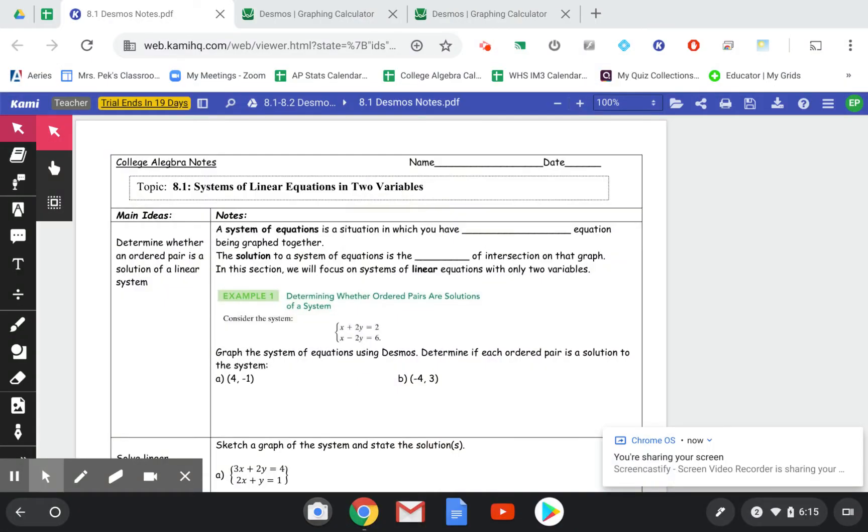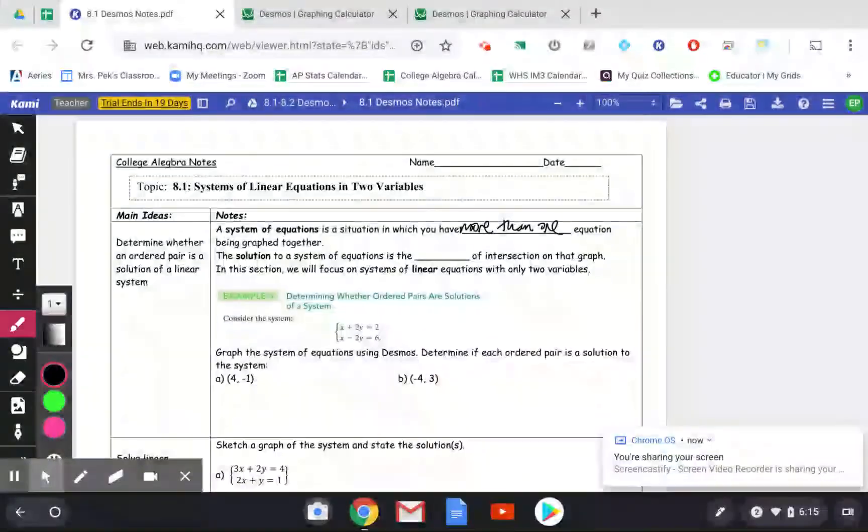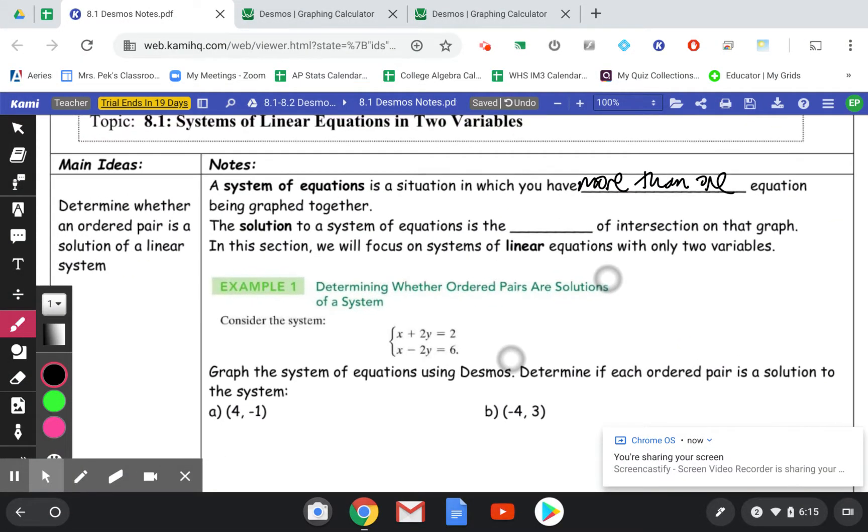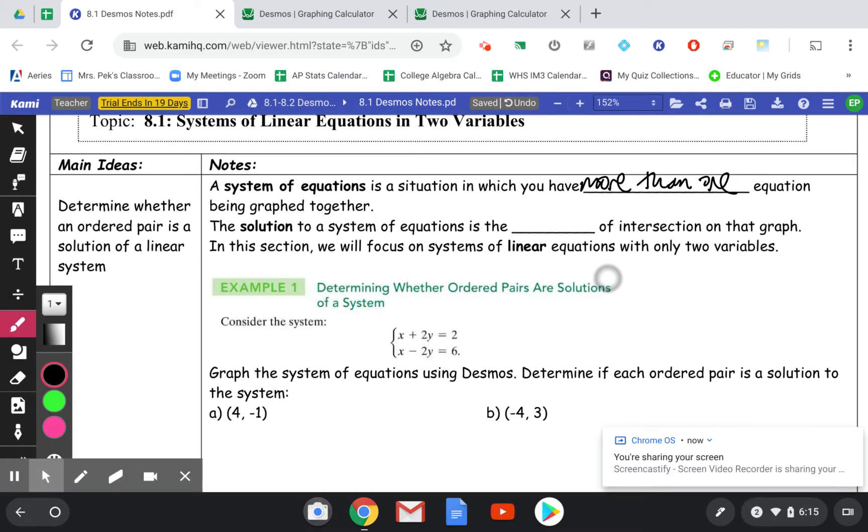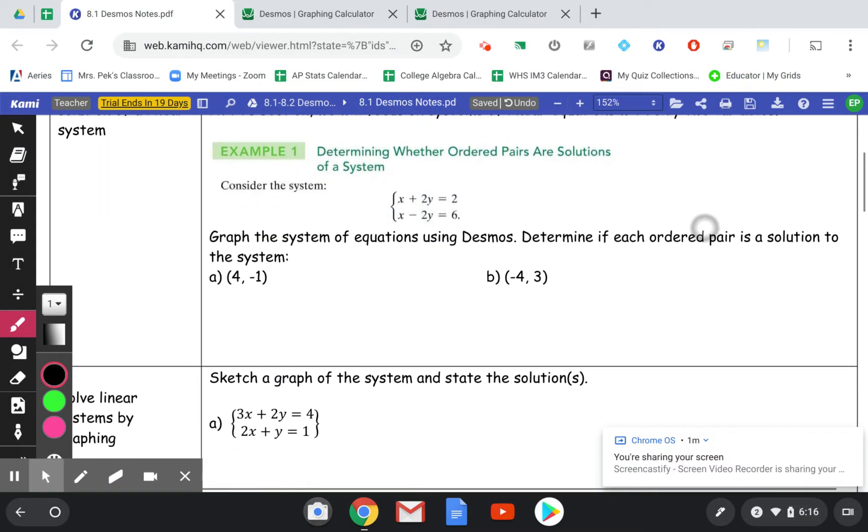We have a system of equations is a situation in which you have more than one equation being graphed together. The solution to a system of equations or system of linear equations is the point of intersection on that graph. So right now we're going to look at just linear equations with two variables.